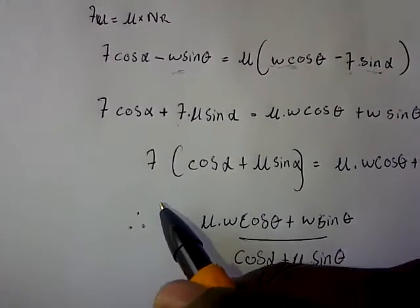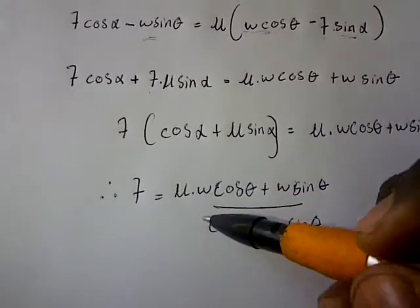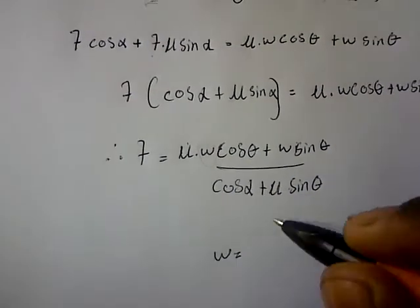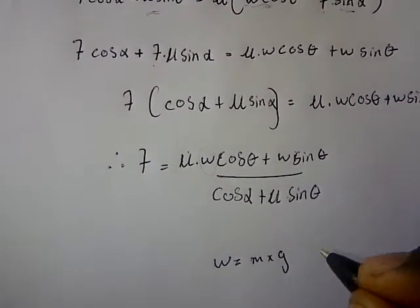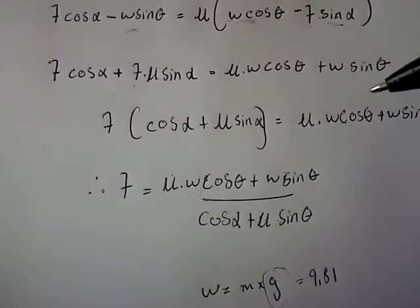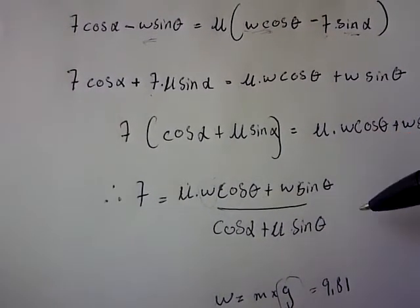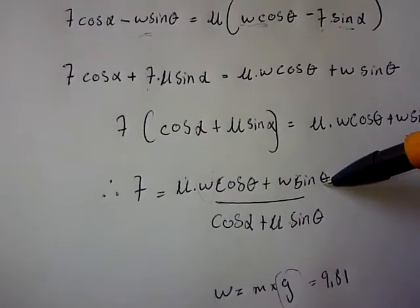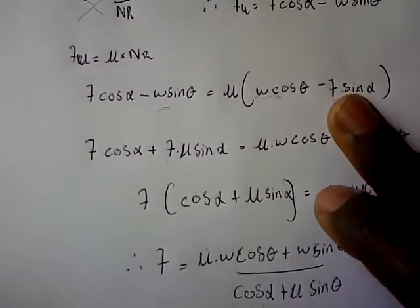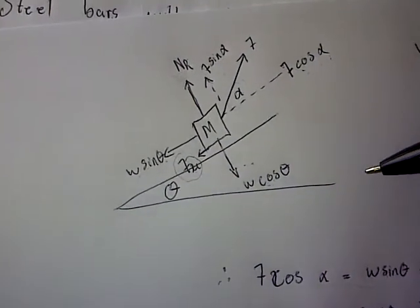Now if you have F as the subject of the formula, you can substitute all the values. The coefficient of friction μ is given, w is our weight which is mass multiplied by gravity (9.81 m/s²), theta is the angle of the inclined plane, and alpha is the angle of force F.